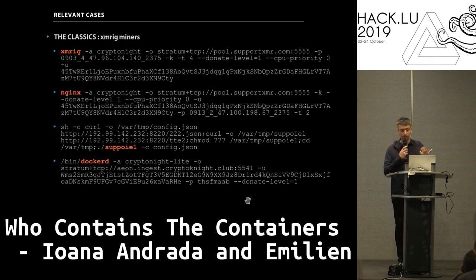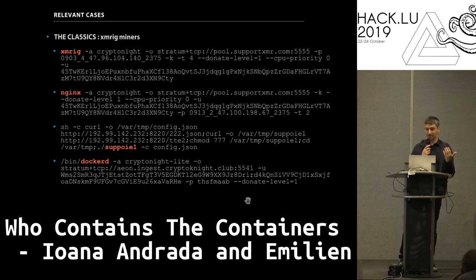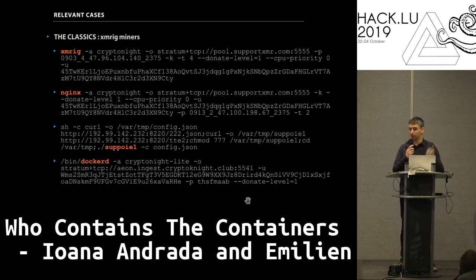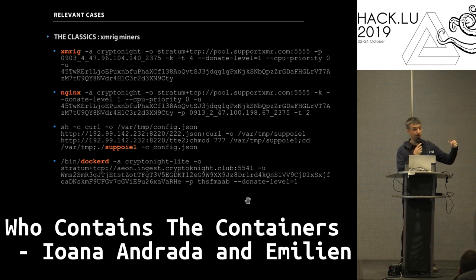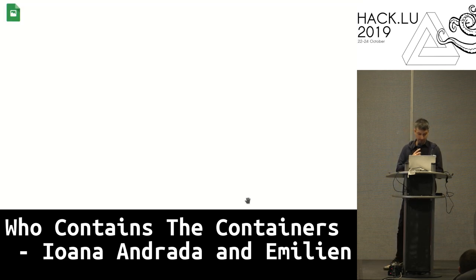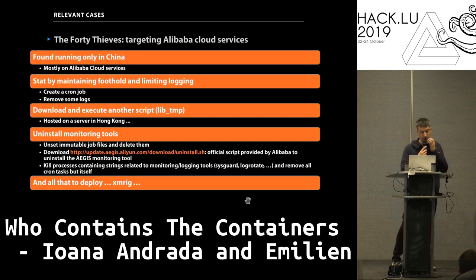What did we find? The classic case — the vast majority, around 99%, is crypto mining. When you compromise this kind of interface you can either encrypt data or use the CPU for crypto mining, and everyone is doing crypto mining. In those command lines you recognize incident response indicators: the stratum protocol, mostly mining Monero cryptocurrency, with the wallet address of the miner. In some cases they try to impersonate other processes like nginx or even dockerd — sure, it looks legit.